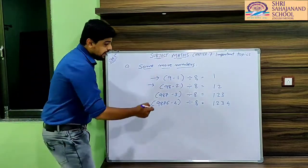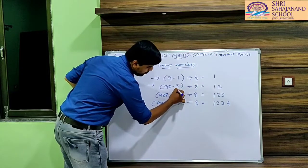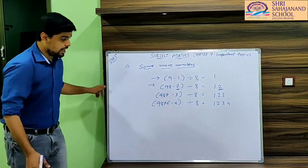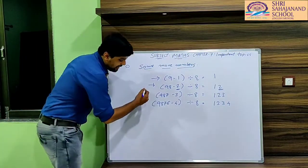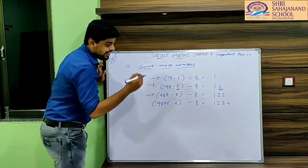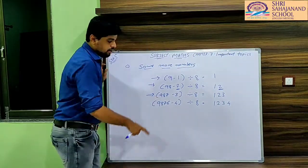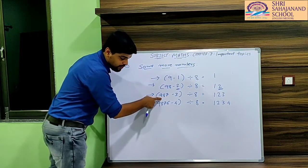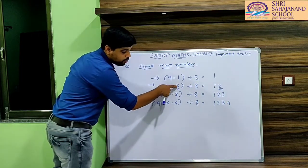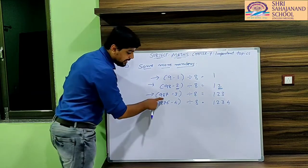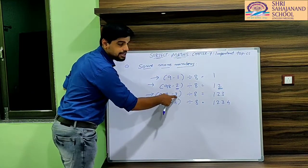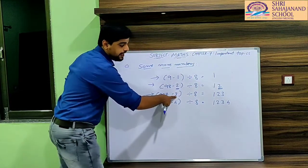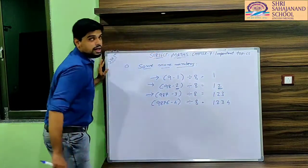If we are subtracting by 2, we got 12 — the answer increased by 2 at the end. In the next step, step 3, they have taken the 3-digit number 987. We have 98, and 8 minus 1 is 7, so the next number is 987. Now 2 plus 1 is 3, so we are subtracting 987 minus 3. If we are subtracting by 3, then 3 gets added to our answer.